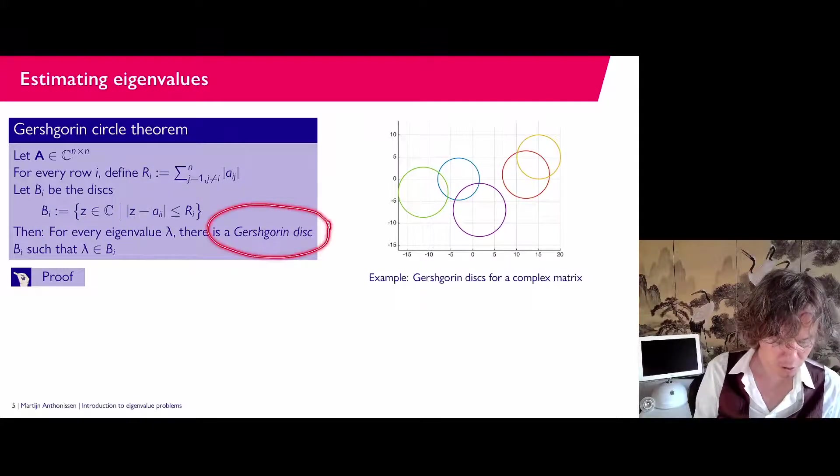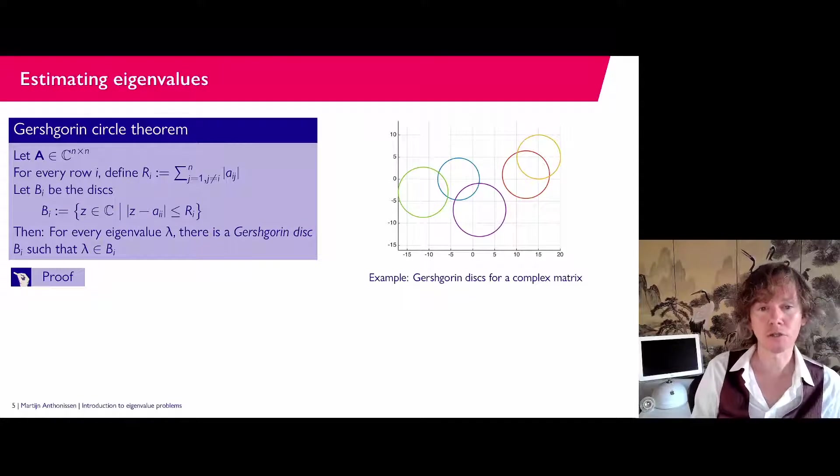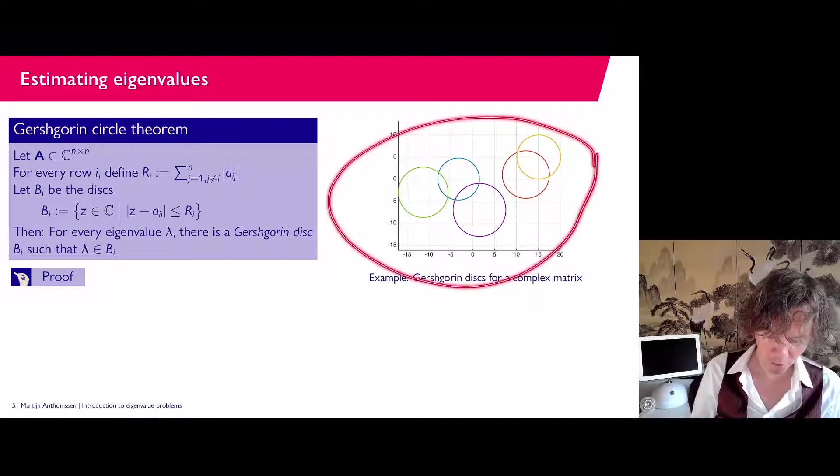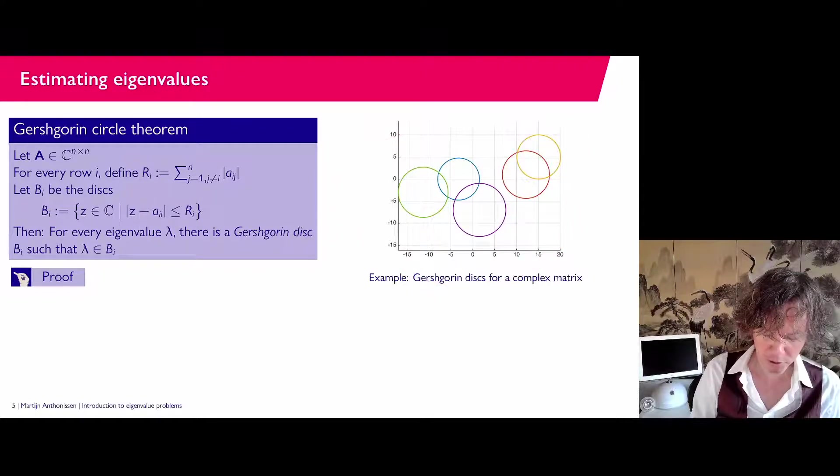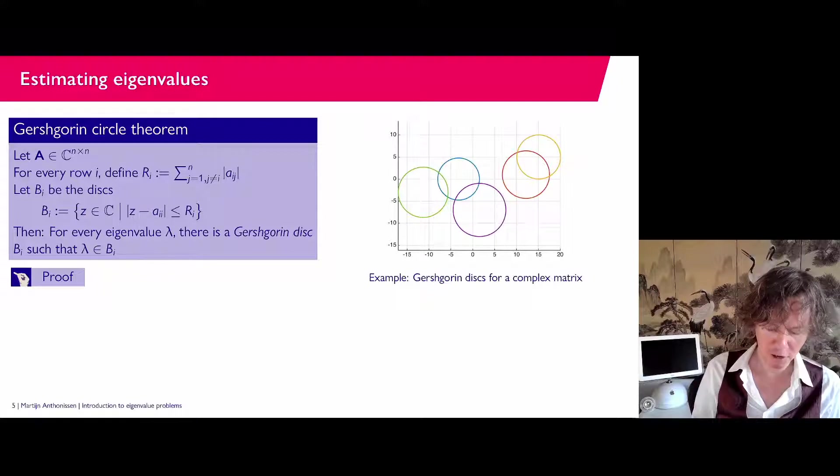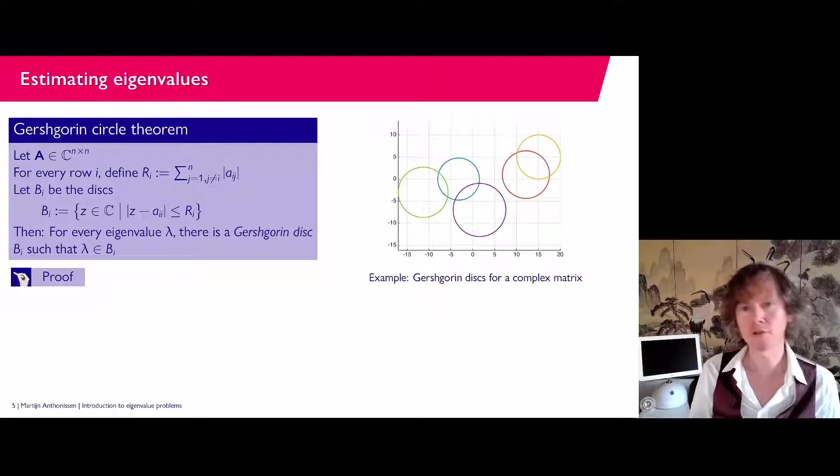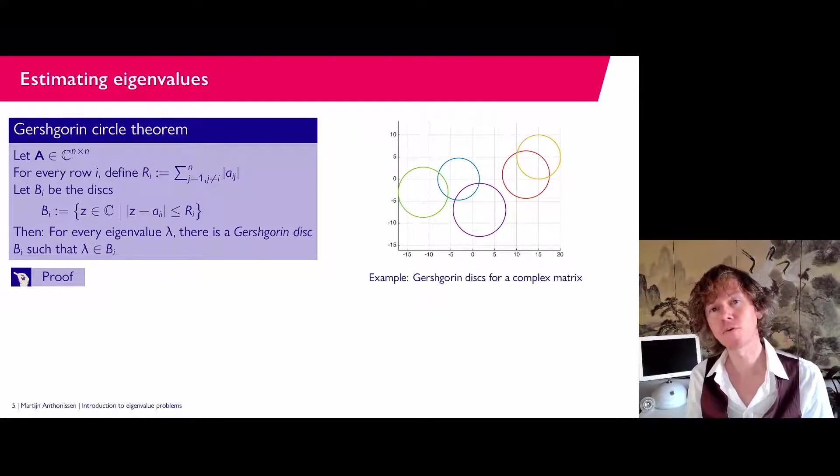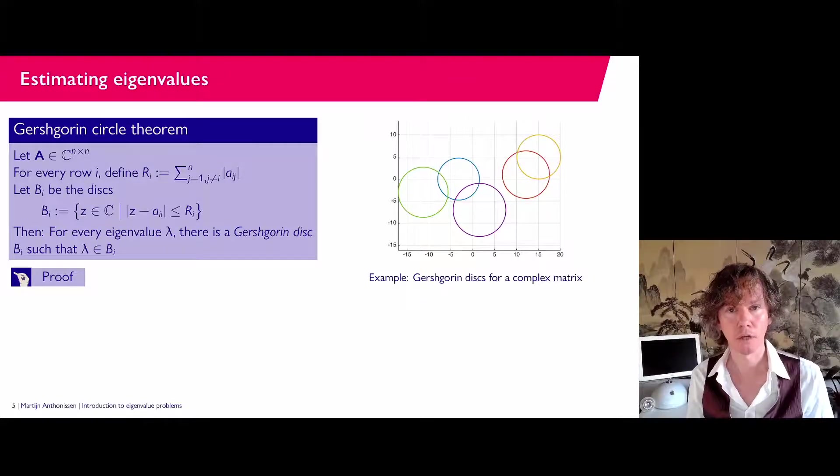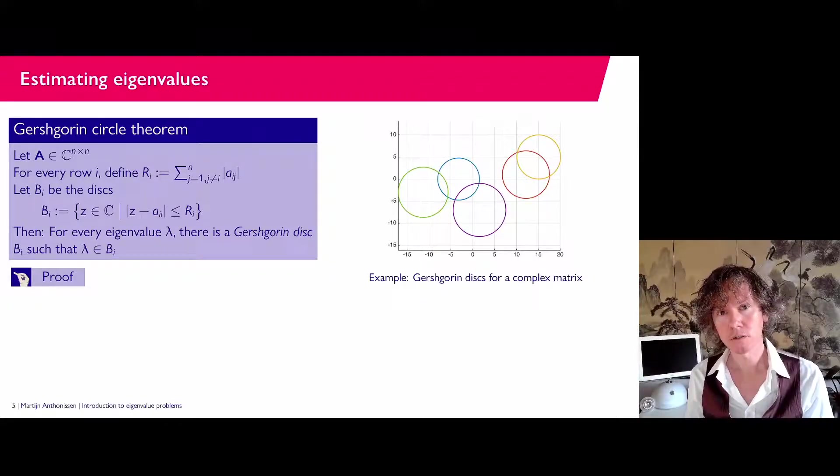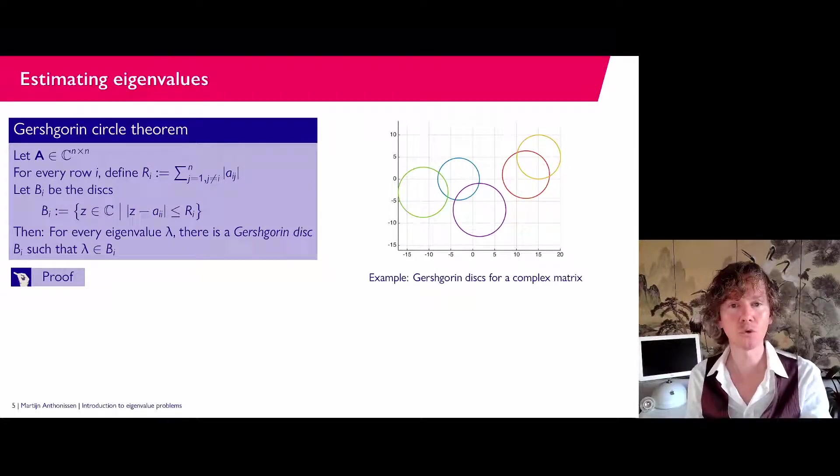Now the claim is that for every eigenvalue of the matrix, you can find such a disk, called Gershgorin disks, such that λ is in this disk. So here in the picture on the right, you see for apparently a 5 by 5 matrix, we have plotted these five disks. And for every eigenvalue, we can find a disk that contains it. It is not true that every single disk needs to contain one of the eigenvalues. That is not true.